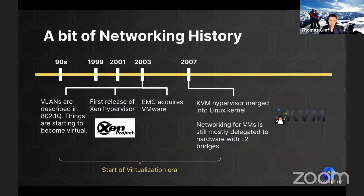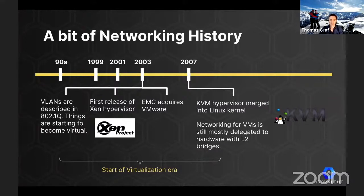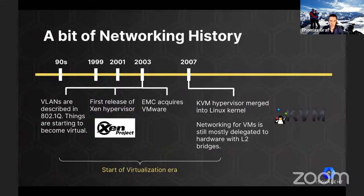In the year 2003, VLANs were first described. The first release of the Xen hypervisor happened and EMC acquired VMware. This was the start of the virtualization era. KVM was first merged into the Linux kernel just a couple of years later in 2007. However, from a networking perspective, nothing much changed. Networking of virtual machines was delegated to the underlying physical network by bridging VMs directly to the network with layer two bridges. Almost no network logic existed in software. Most of the focus in the Linux kernel was on the TCP/IP stack or optimizing Linux as an operating system to run applications.